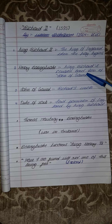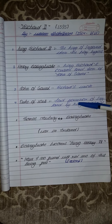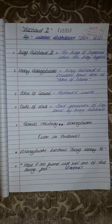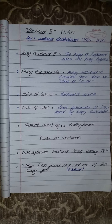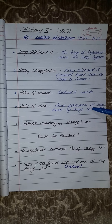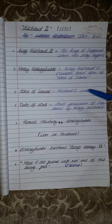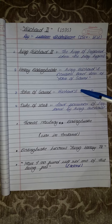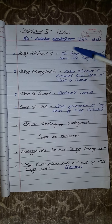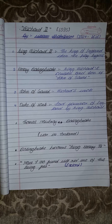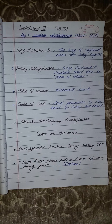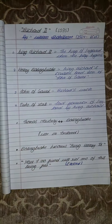Next is the Duke of York. Duke of York kaun hote hai? Basically, Duke of York jo hote hai woh Richard aur Henry Bolingbroke ke uncle hote hai. Which means Duke of York, John of Gaunt, aur Henry Richard II ke father — yeh sab aapas mein bhai hote hai.